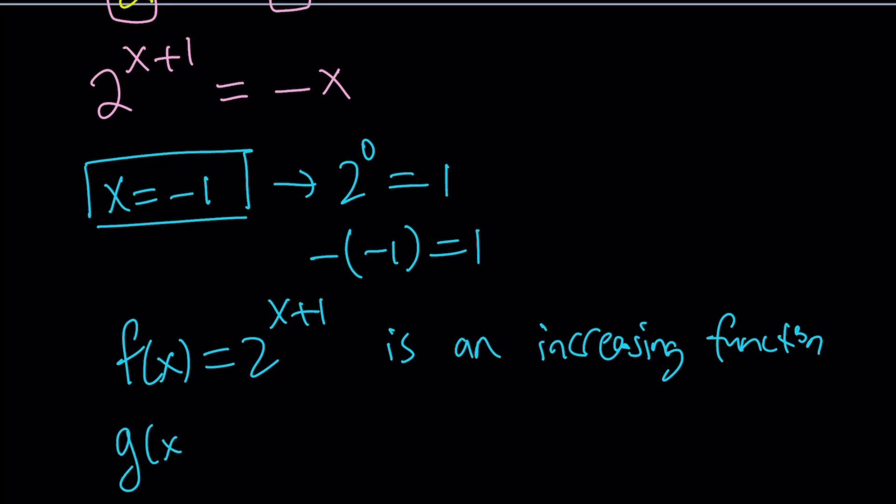What about the other one? Let's call that g of x. If g of x is negative x, as you know, negative x has a negative slope. Therefore, this is always a decreasing function.